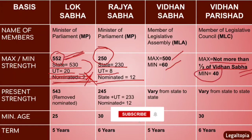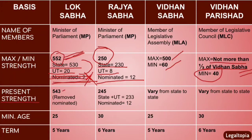Moving to present strength. Lok Sabha's present strength is 543, as nominated members have been removed. Rajya Sabha's present strength is 245: 233 (states plus Union Territories) and 12 nominated members. Vidhan Sabha and Vidhan Parishat strengths vary from state to state.